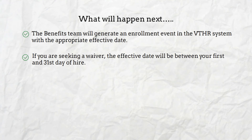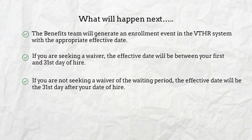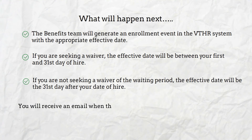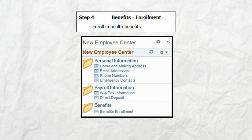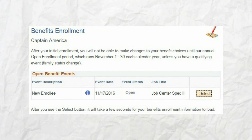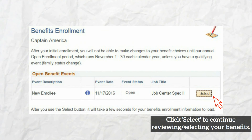The benefits team will generate an enrollment event in the VTHR system with the appropriate effective date. If you are seeking a waiver, the effective date will be between your first and 31st day of hire. If you are not seeking a waiver, the effective date will be the 31st day after your date of hire. You will receive an email when the enrollment event is ready to access in VTHR. Click on the benefits enrollment link in the New Employee Center menu to begin.